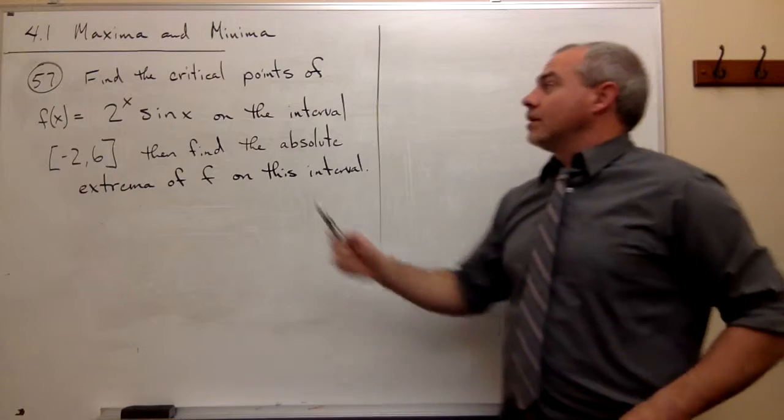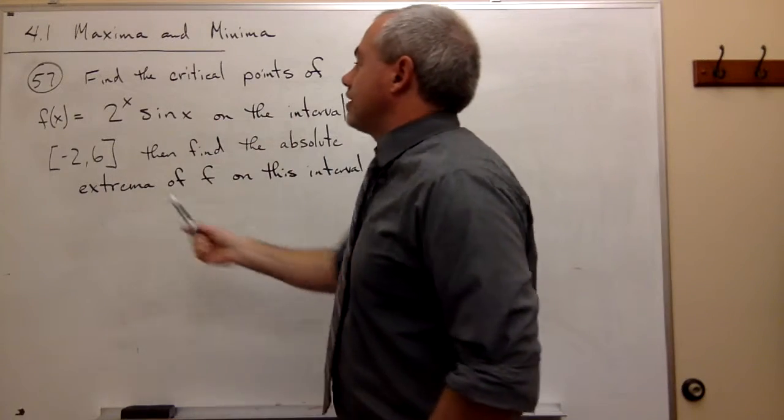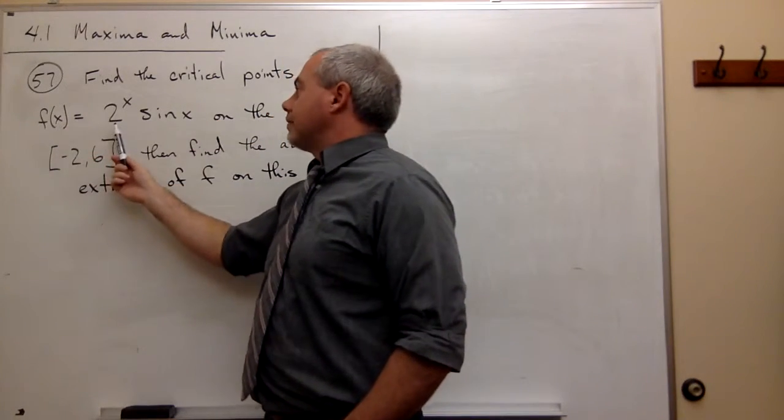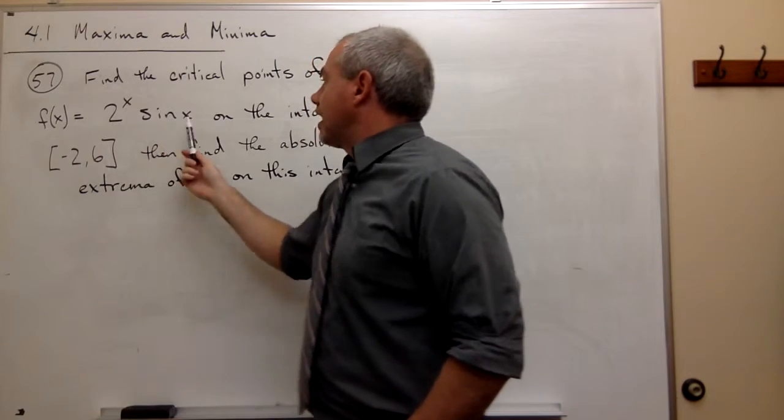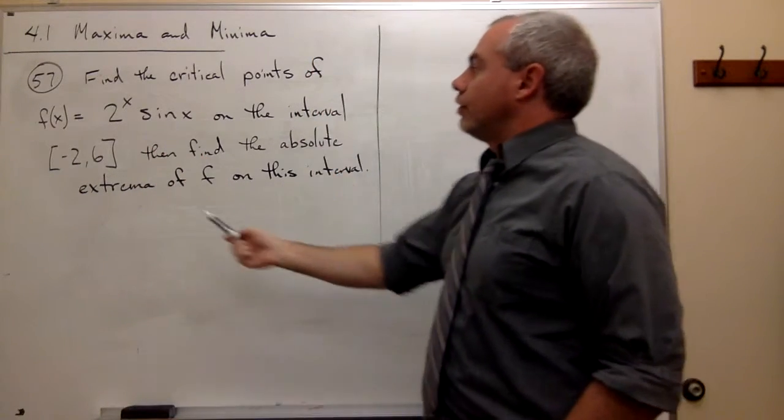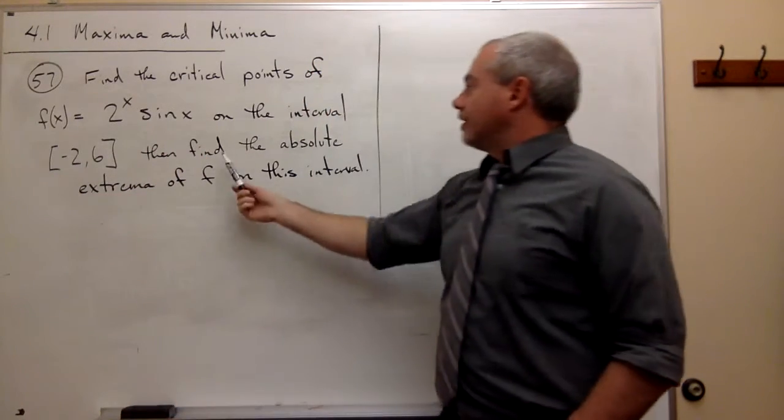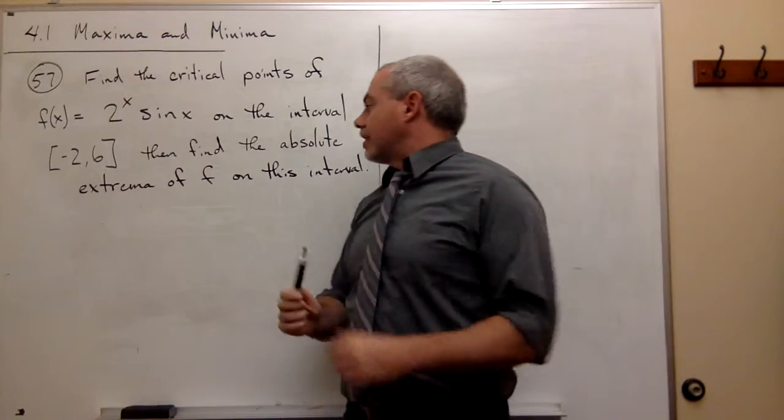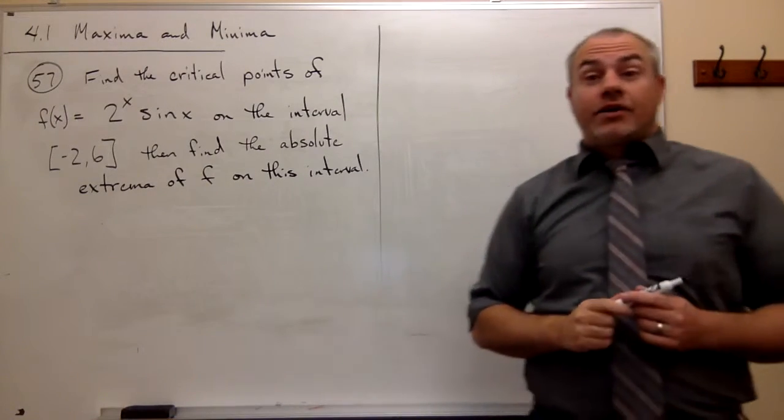In number 57, we want to find the critical points of the function f of x equals 2 to the x sine x on the interval negative 2 to 6, and then we want to find the absolute extreme of the function on that interval.